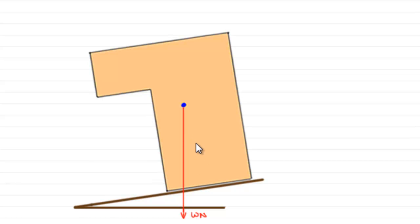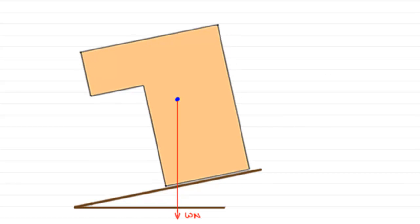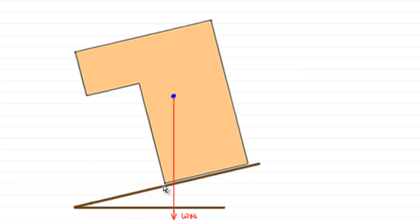Now, if I assume that the lamina will not slide down the plane, that the plane is rough enough to prevent sliding, then let's see what happens as I raise the angle of the plane. As I raise this angle, you can see the line of action of the weight gets closer and closer to this point here.